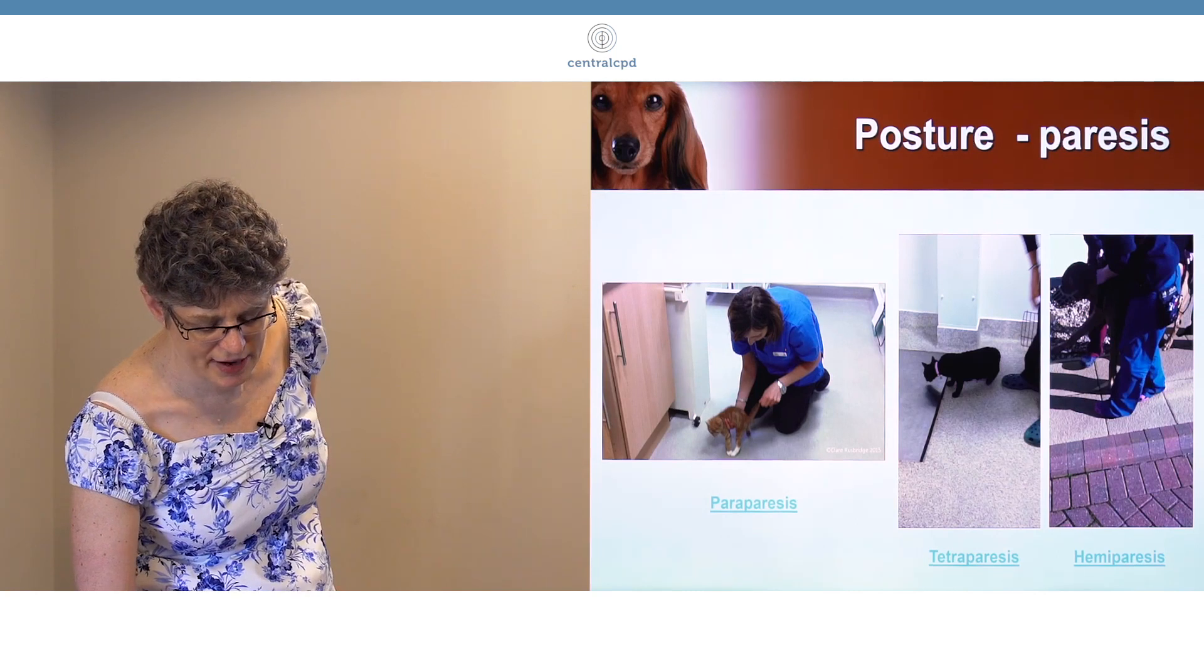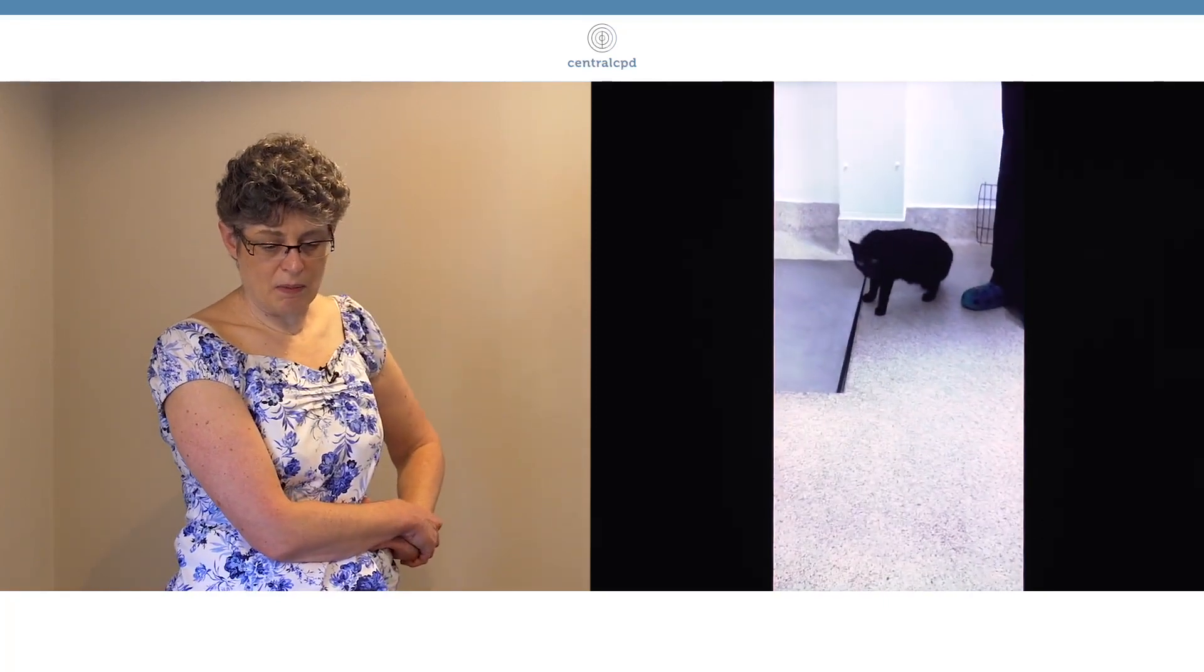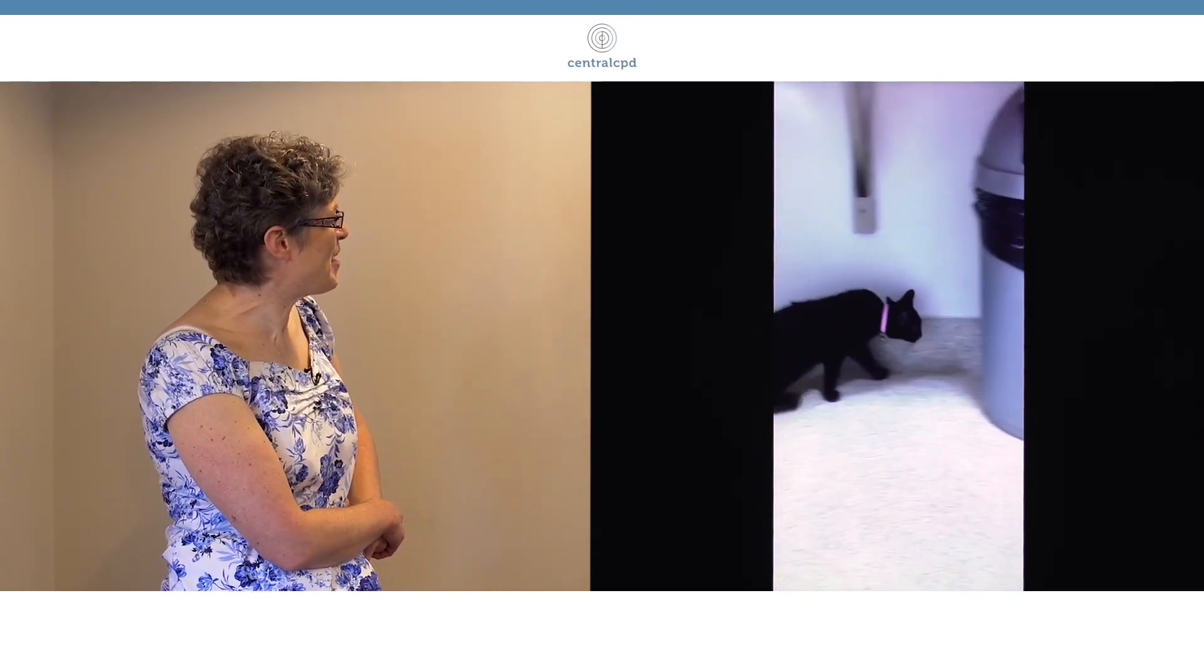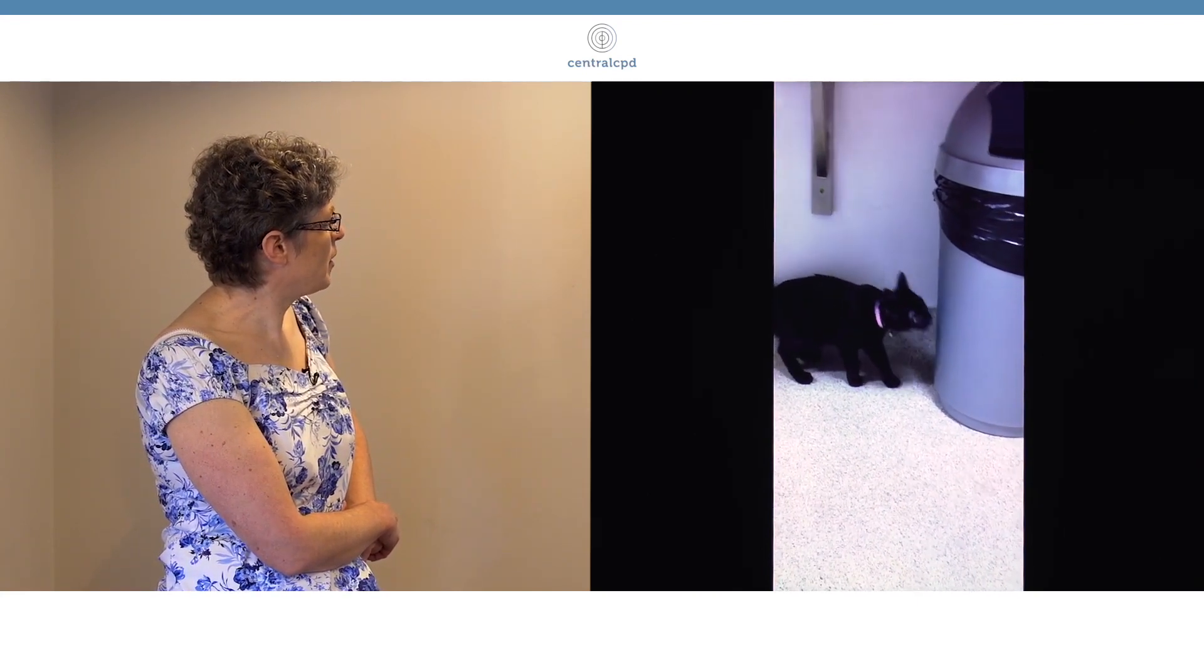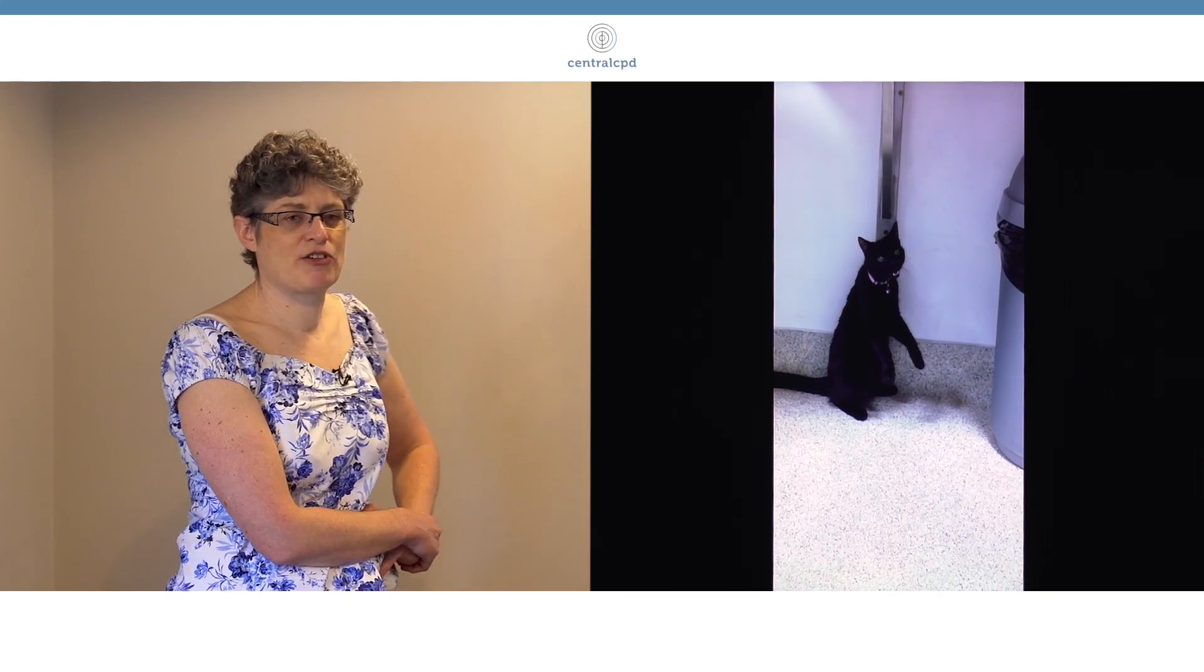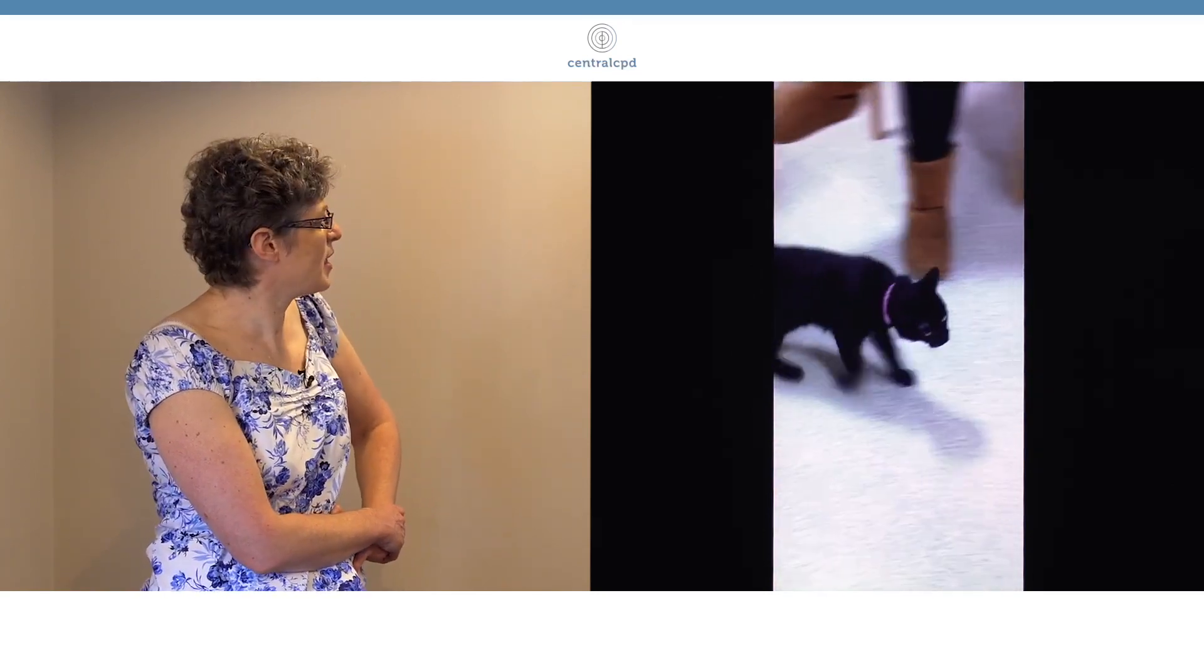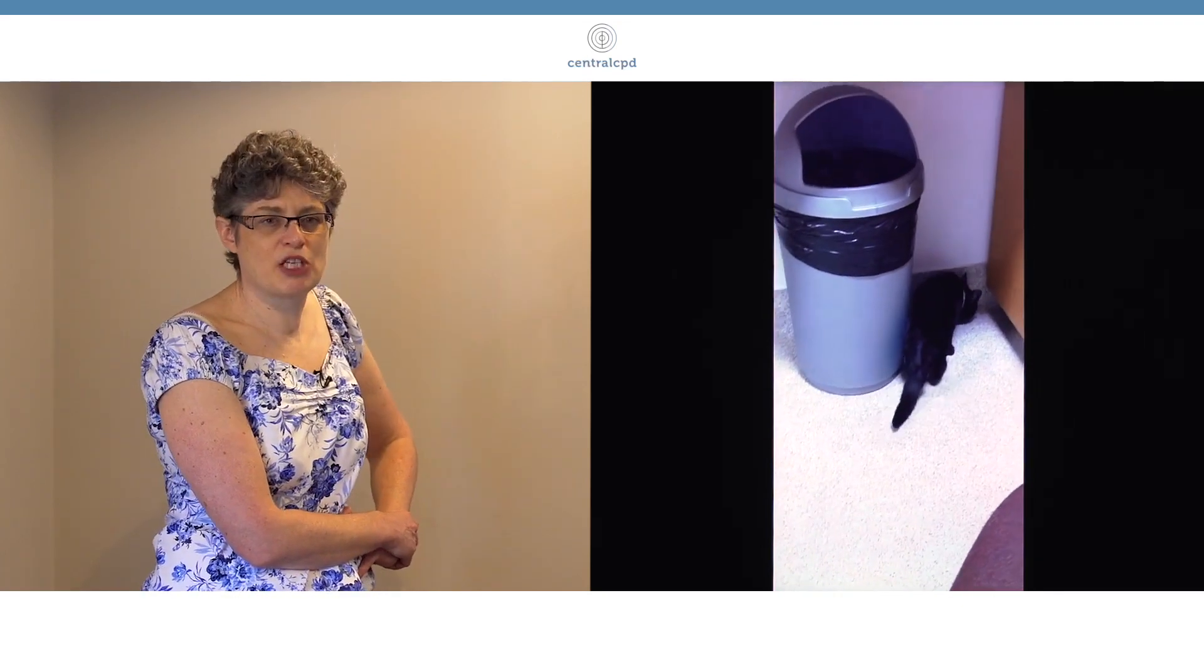We also see tetraparesis, which is the most important differential when an animal is weak in all four limbs. You can see this cat here has an odd facial expression. It's walking very abnormally, mouth open, tongue protruded. See that meerkat cat posture? That's very characteristic of a neuromuscularly weak cat. This cat doesn't have spinal cord disease; it has neuromuscular disease, which is the big pretender for spinal cord disease.